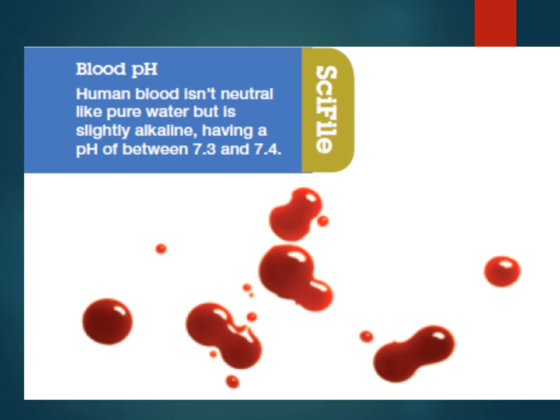Blood pH is important — the pH of blood is between 7.3 and 7.4, so blood is just very slightly alkaline.